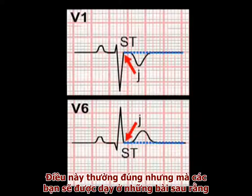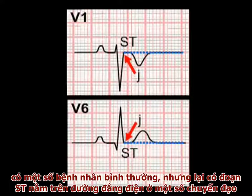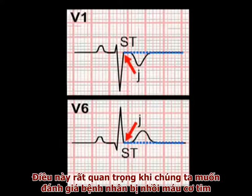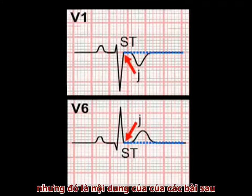This is generally true, but you will learn later in this course that there are normal ECG variants in which the S-T segment lies above the isoelectric line. This becomes very important when we go on to try and identify patients with myocardial infarctions, but that's for later.